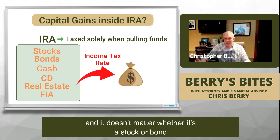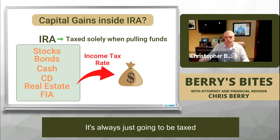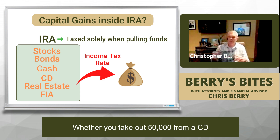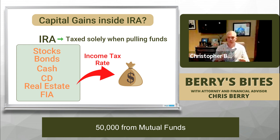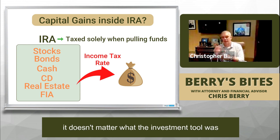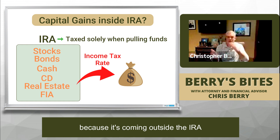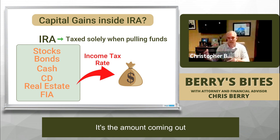It doesn't matter whether it's a stock, bond, cash, CD, or fixed index annuity — it's always just going to be taxed on whatever amount you take out. Whether you take out $50,000 from a CD, $50,000 from a fixed index annuity, or $50,000 from mutual funds, when you take that money out, it doesn't matter what the investment tool was. Whatever that value is, it's the amount coming out that's going to be what's taxed.